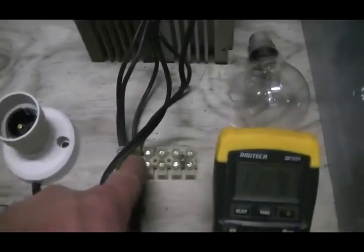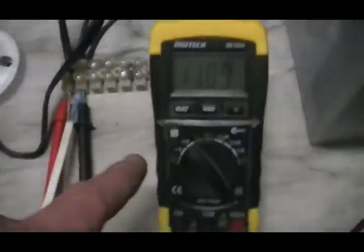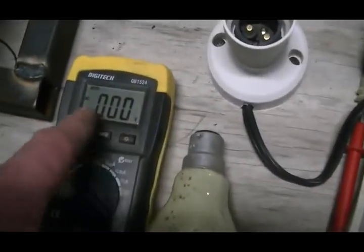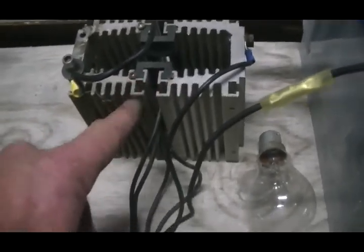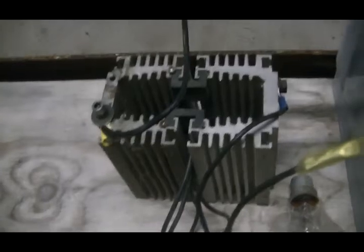So we're coming out of our generator, going into here, a little chocky block, which this meter is hooked up to to show us the AC voltage. And then we're going through this block here, which is my heavy duty full wave bridge rectifier.